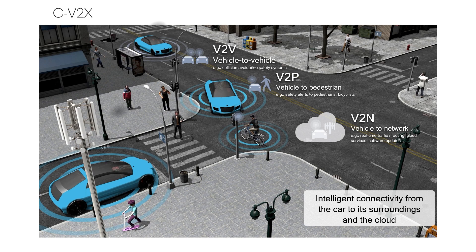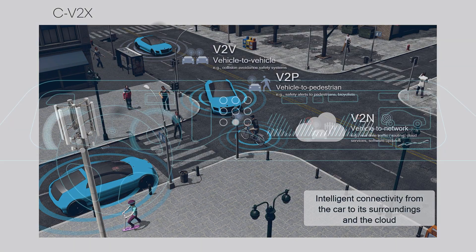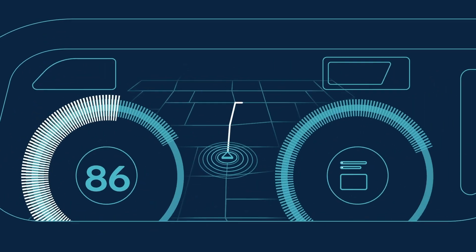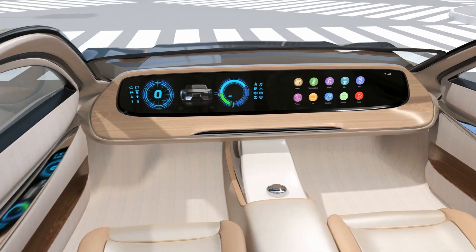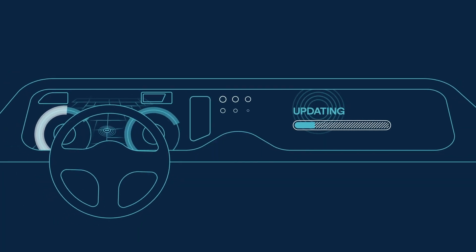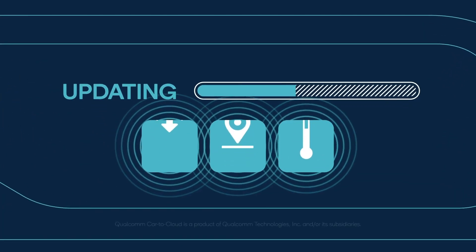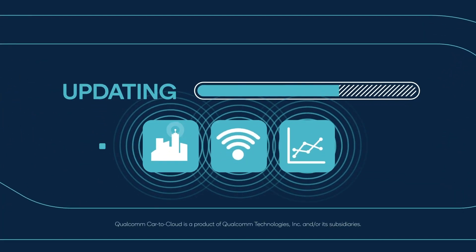The next use case is V2N, or Vehicle to Network communication, which is primarily meant to facilitate real-time and high-speed traffic between the car and the network. Use cases may include real-time traffic updates, map-based navigation, cloud or infotainment services, and software updates that come from the network cloud.